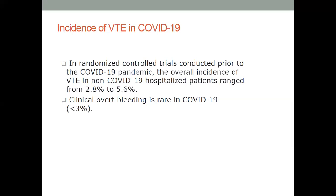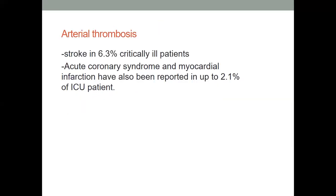One good thing about COVID-associated coagulopathy is that overt clinical bleeding is rare. We talk about venous thrombosis being by far the more common manifestation, but arterial thrombosis has also been recorded, especially in early reports. Strokes were found to occur in 6.3 percent of patients, and acute coronary syndrome and myocardial infarction have also been reported.